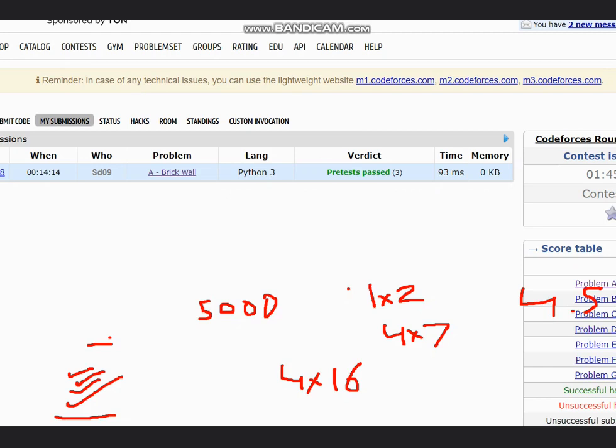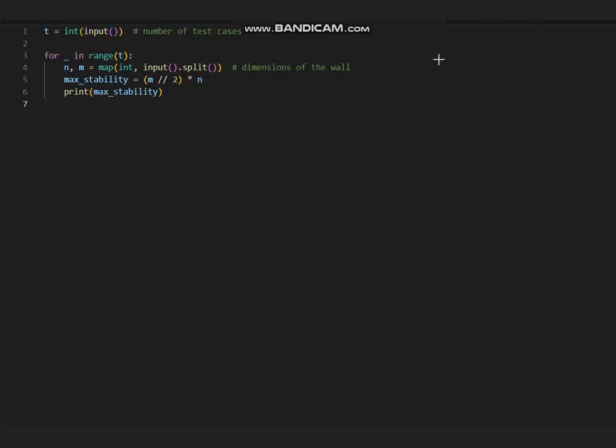Now let's look at the code to understand it in a more better way. This is our code here. Explaining it one by one: we have taken the number of test cases, then n and m, the dimensions of the wall. Maximum stability is calculated by m/2×n. If we are writing in C++, you can use math.floor. Here we are using the integer division directly. I hope you all understand this solution. Thanks for watching.